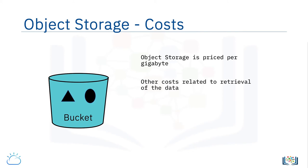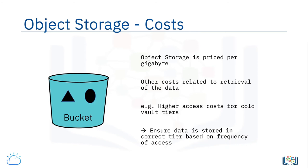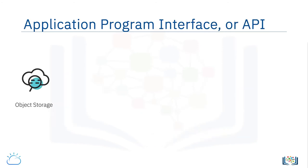We've mentioned that object storage is priced per gigabyte used, but there can also be other costs related to retrieval of the data. These costs are similarly low, but access charges can be higher for data that is in vault or cold vault tiers. So it is important to ensure that the data is in the correct tier based on its frequency of access.